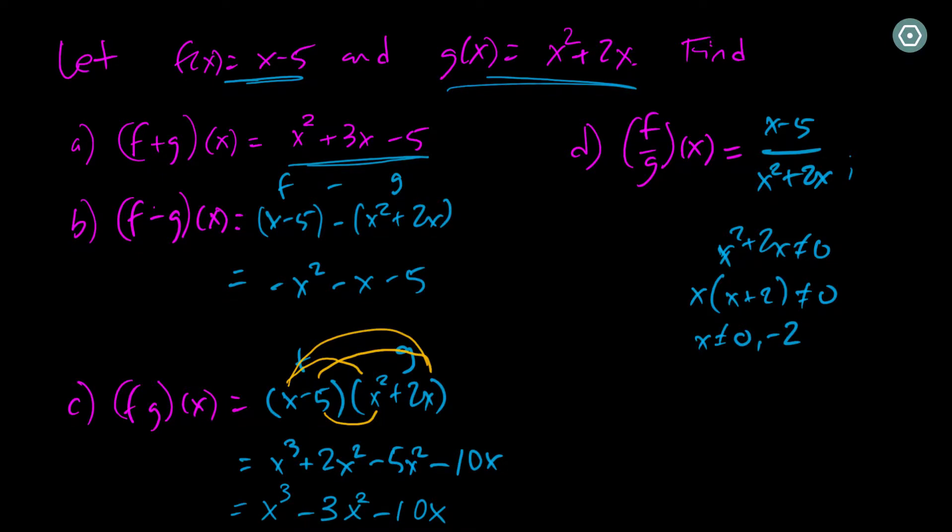So what this means is for part d, if this is going to be a function, then I need to add one stipulation that this is now excluded from my domain. I cannot have x to be 0 or negative 2.